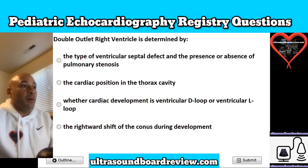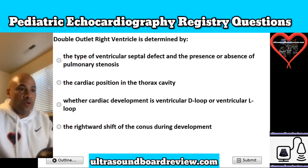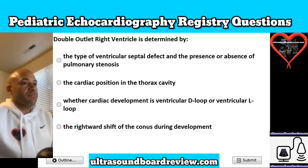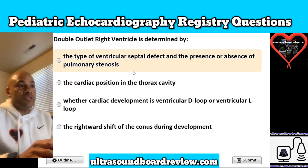Question 11. Double outlet right ventricle is determined by: A, the type of ventricular septal defect and the presence or absence of pulmonary stenosis; B, the cardiac position in the thorax cavity; C, whether cardiac development is ventricular D-loop or ventricular L-loop; or is it D, the rightward shift of the conus during development? The answer is A: the type of ventricular septal defect and the presence or absence of pulmonary stenosis.